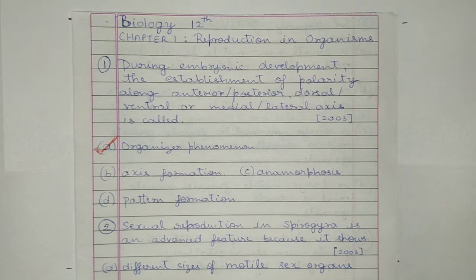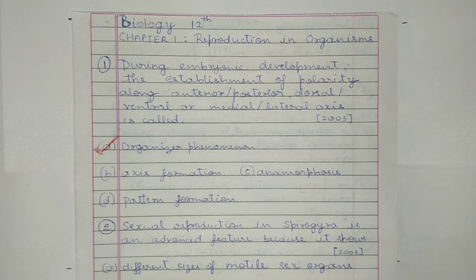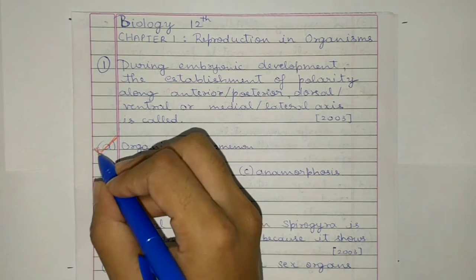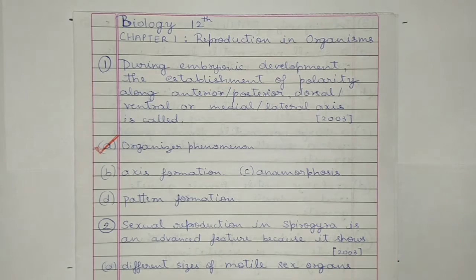Question 1. During embryonic development, the establishment of polarity along anterior or posterior, dorsal or ventral, medial or lateral axis is called: organizer phenomenon, axis formation, anamorphosis, or pattern formation. The answer is organizer phenomenon.